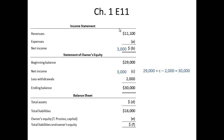Looking at the income statement, we now have revenues and net income. The equation for the income statement is revenues minus expenses equals net income. So we can solve for A: $11,100 in revenues minus A for expenses equals $3,000 of net income. Rearranging the equation, total expenses A equals $8,100.